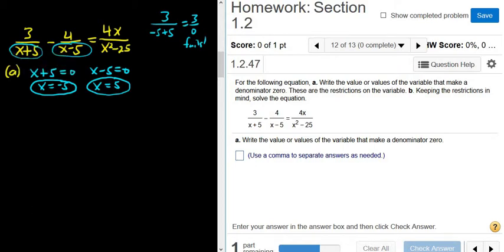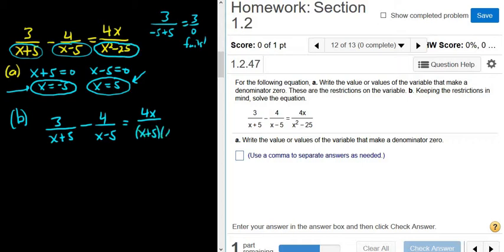Part B wants us to solve the equation, keeping the restrictions in mind. So in other words, if we solve the equation and we get any of these answers, the answer is no solution. So I'll carefully rewrite the equation. So 3 over x plus 5 minus 4 over x minus 5 equals 4x. And you'll notice that this is the difference of squares. x squared minus 25 is the same as x plus 5 times x minus 5.